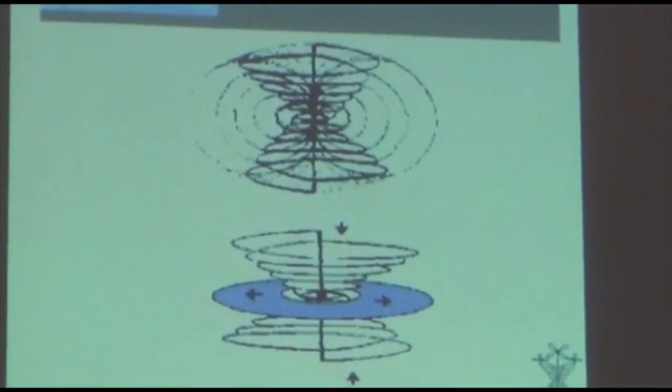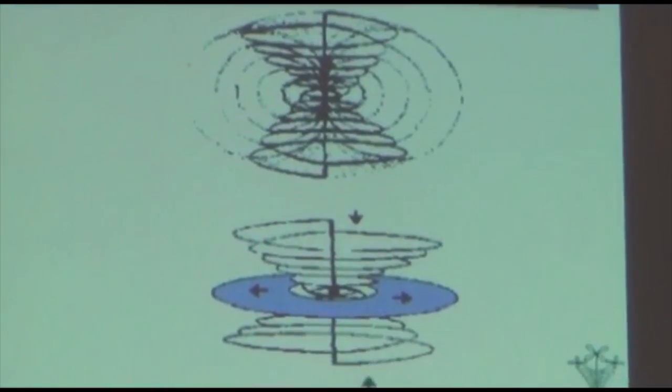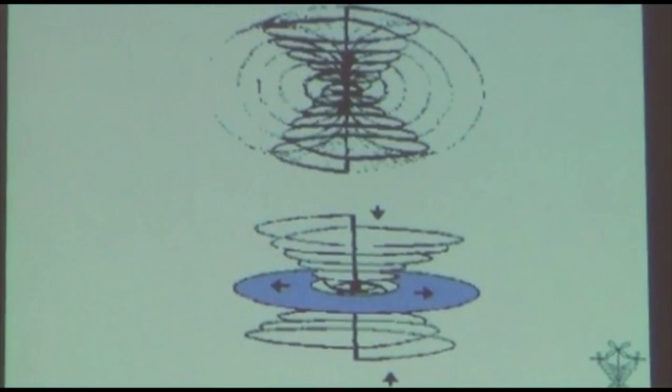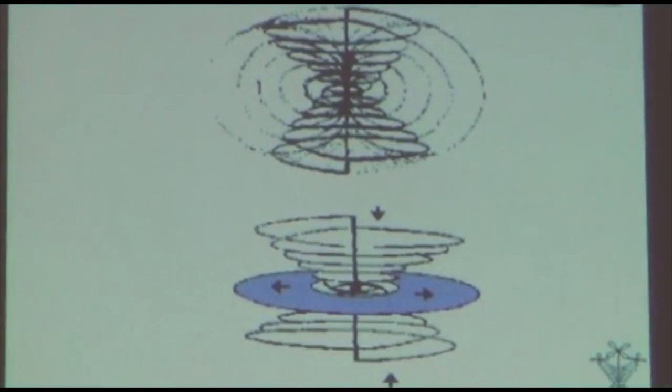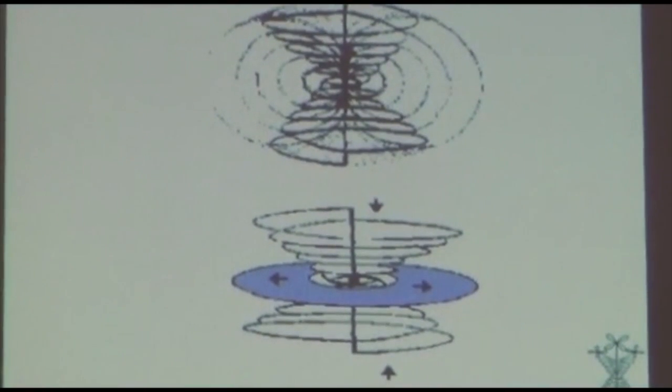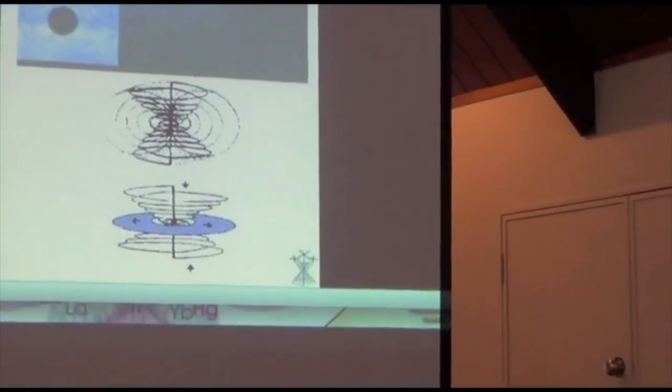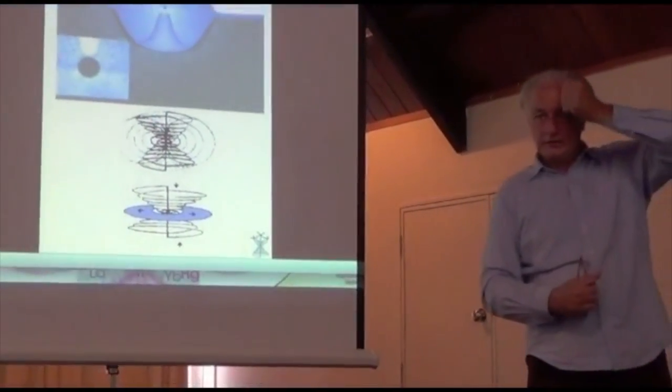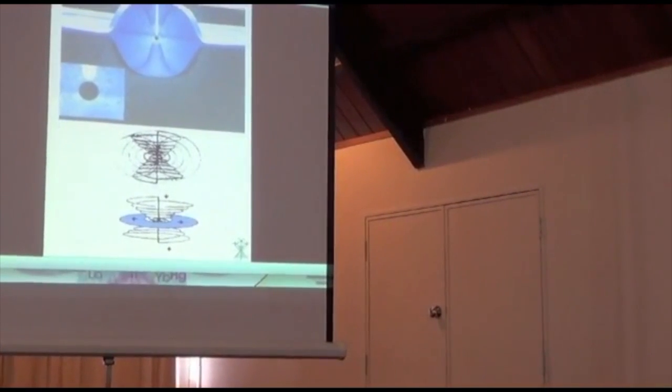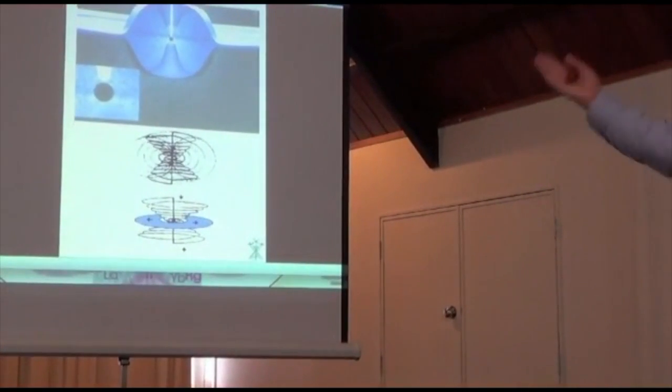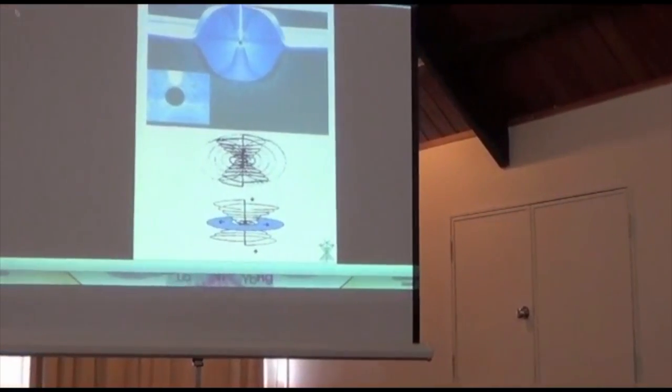This is the basis of anthroposophical medicine. There is this interrelationship between the nerve sense and the metabolic system that is functioning. If that polarity is working properly, then this interaction for the circulation and the respiration will stay healthy. When we're looking at illness, this is what we're looking at. This is the basic pattern that's the archetype for that process.